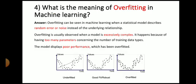Next question: what is the meaning of overfitting in machine learning? The answer is, overfitting can be seen in machine learning when a statistical model describes random error or noise instead of underlying relationship. Overfitting is usually observed when the model is excessively complex. It happens because of having too many parameters concerning the number of training data types. The model displays poor performance which has been overfitted. Here you can see three types of fitting: underfitting, good fitting, and overfitting.